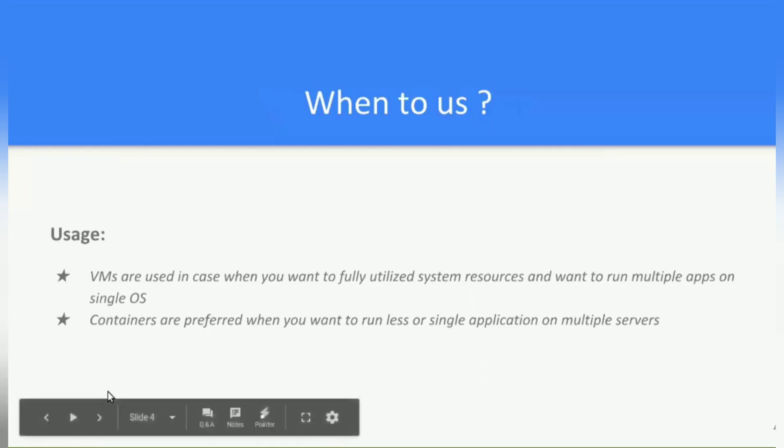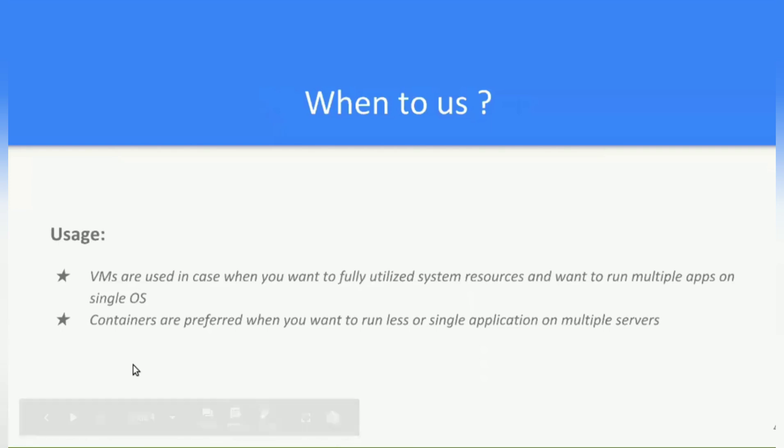After discussing the differences between virtual machine and a docker container, let's discuss when to use a virtual machine and when to use a docker container. Virtual machines are used in case of a monolithic application where all the components are packaged together and you want to fully utilize the system resources. On the other hand, docker containers are used mostly in case of microservices where you want each service to run on multiple servers.